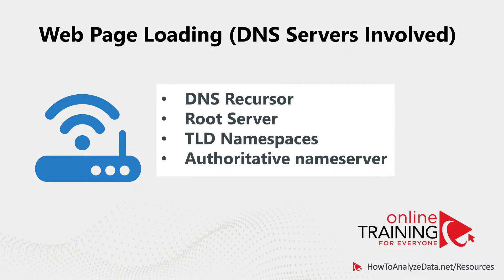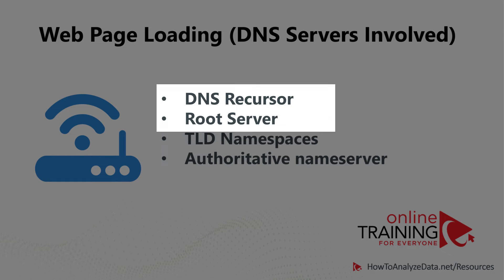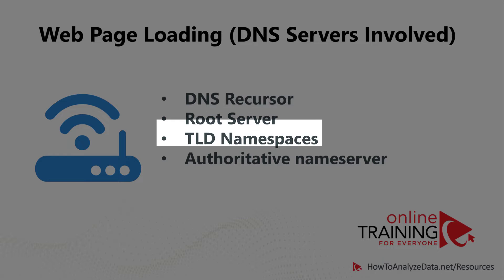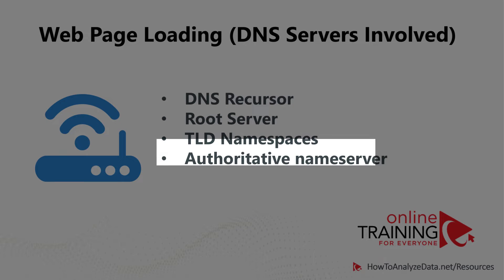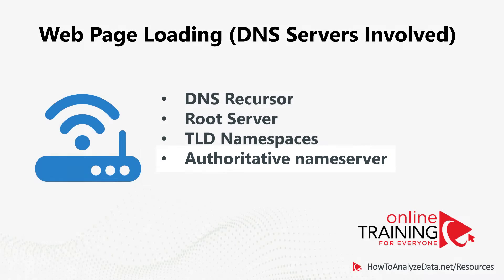DNS architecture on the internet is very sophisticated and it consists of four different layers: DNS recursor, root server, TLD namespaces, as well as authoritative name server.